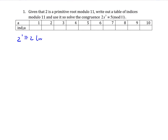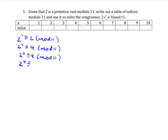So 2 to the 1 is 2. 2 squared is 4. 2 cubed is 8. 2 to the 4th is 16 which reduces to 5 mod 11. 2 to the 5th is 2 times 2 to the 4th, so 2 times 5 is 10.